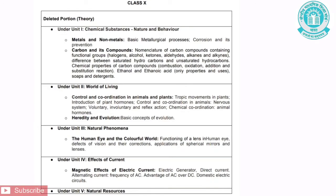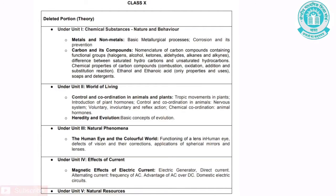Unit 2 is the World of Living. It has two chapters. The first chapter is Control and Coordination in Animals and Plants. The topics removed are: Tropic Movements in Plants, Interaction of Plant Hormones, Control and Coordination in Animals, Nervous System, Voluntary and Involuntary and Reflex Actions, Chemical Coordination, and Functions of Hormones in Animals.